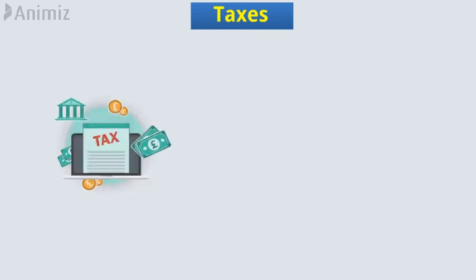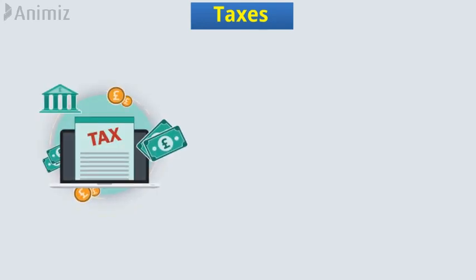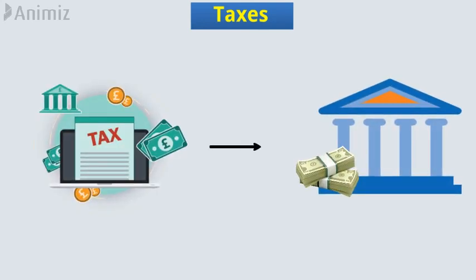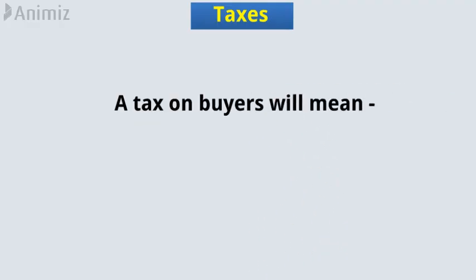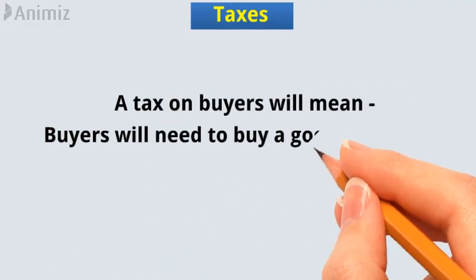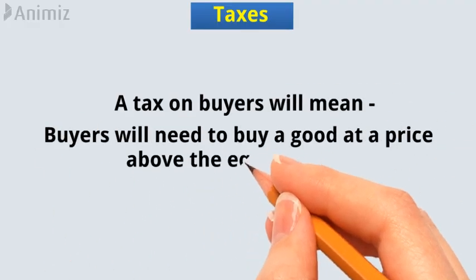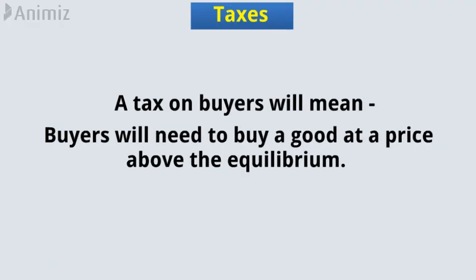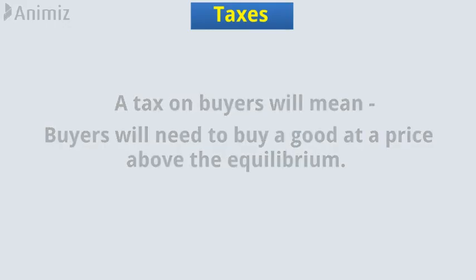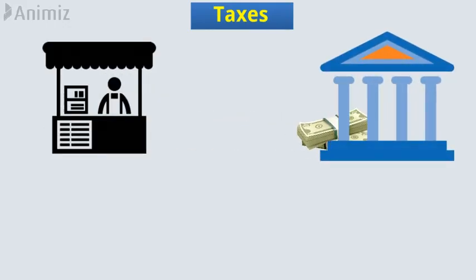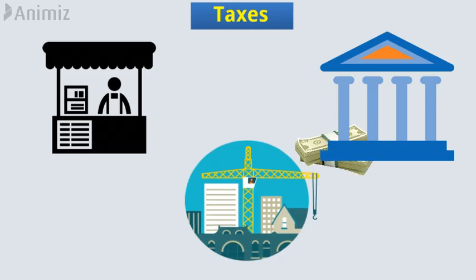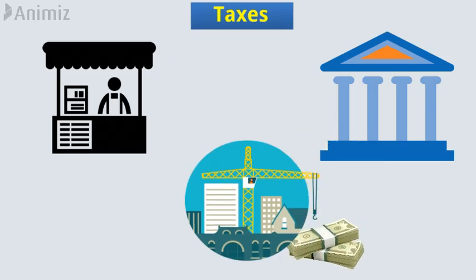Taxes. Government-imposed taxes raise government revenue. A tax on buyers will mean that buyers need to buy a good at a price above the equilibrium. However, the additional profits generated this way will be collected by the government rather than the seller, to fund public infrastructure projects.